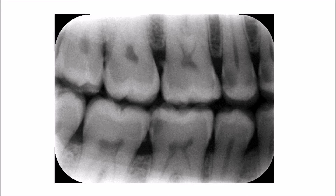For radiographic detection of calculus, the best radiographic view is a good quality bitewing radiograph, which can show calculus deposits even in early formation before they get bigger. In a bitewing radiograph, calculus deposits typically appear as triangular radiopaque projections located exactly beneath the cemento-enamel junction.